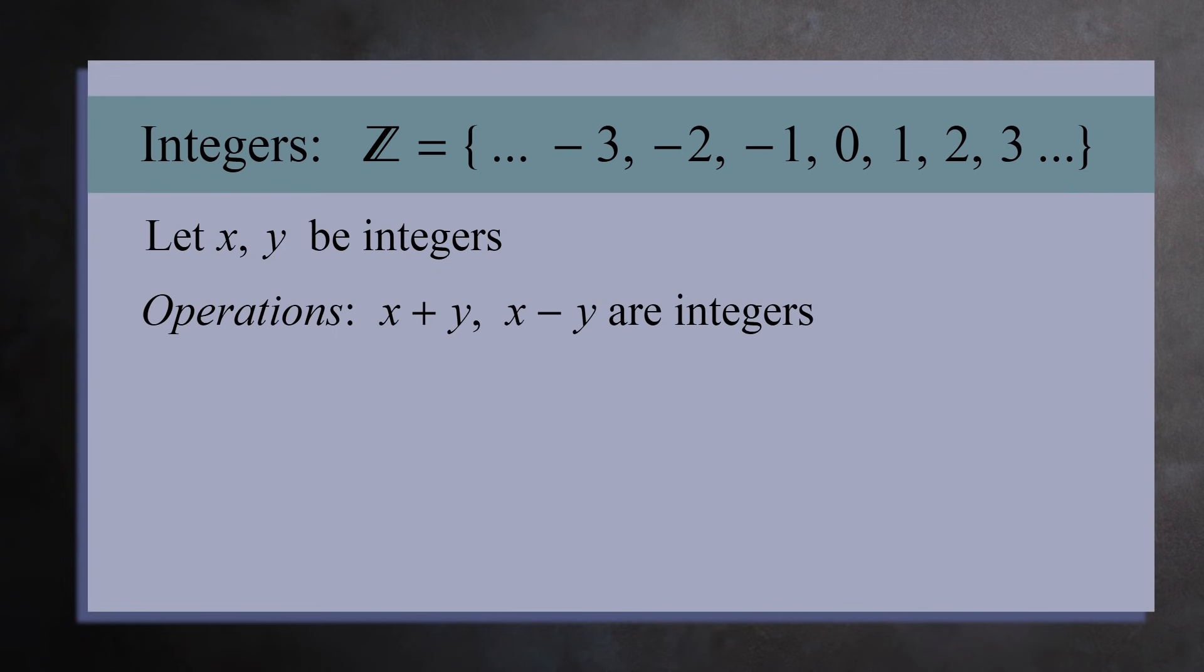The integers under addition. The integers, which we denote by the letter Z with a double stroke, are the set of all whole numbers. Let's look at a few interesting properties of the integers. You can add and subtract any two integers. But notice that subtraction is really just adding with negative numbers. For example, 7 minus 11 is the same as 7 plus negative 11, which is negative 4. For this reason, it's common to say there's a single operation, addition.